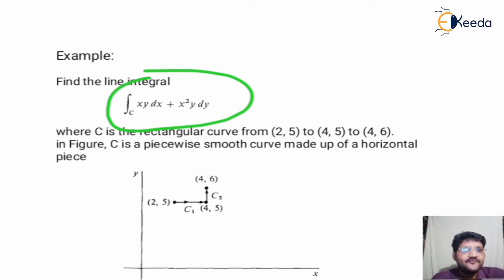In the figure, we can see C1 and C2, these are two pieces. And C is a piecewise smooth curve made up of horizontal pieces C1 and C2.